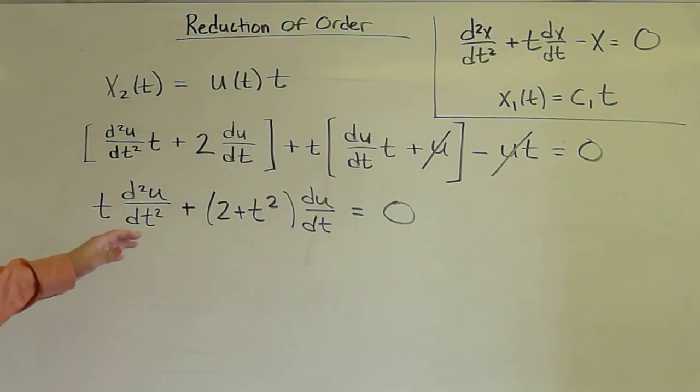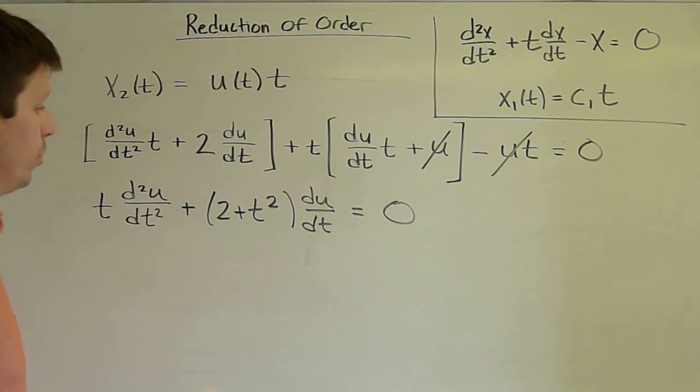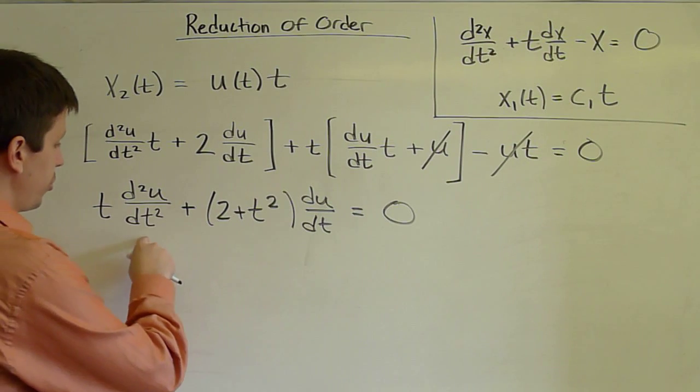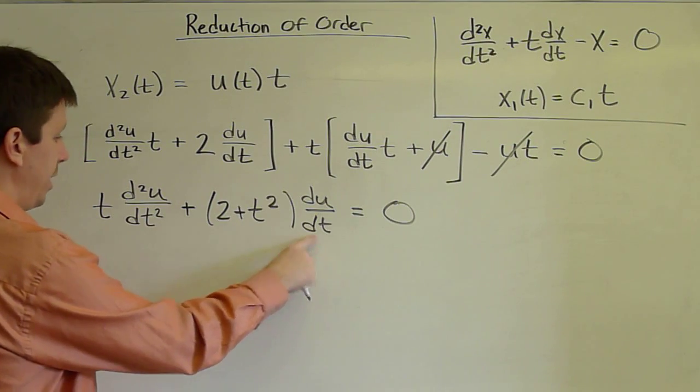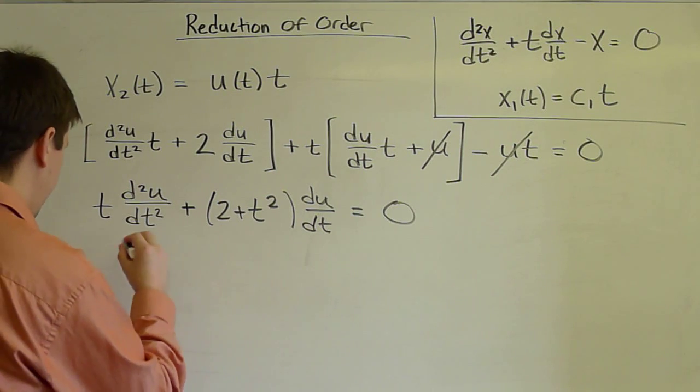And this problem is still second order for u, but it's lacking a zeroth derivative of u. And so it's really just a first order differential equation on du/dt. So to formally encode that, we make a substitution. We say v is du/dt.